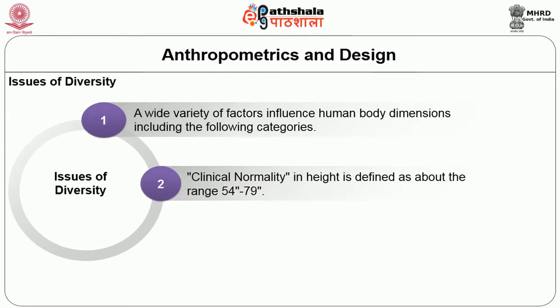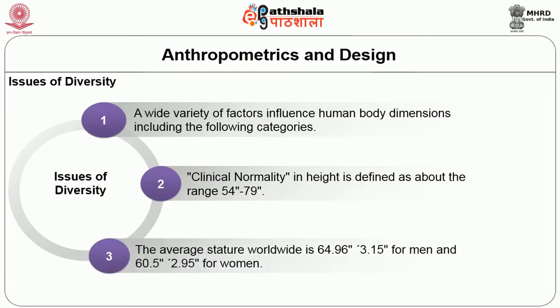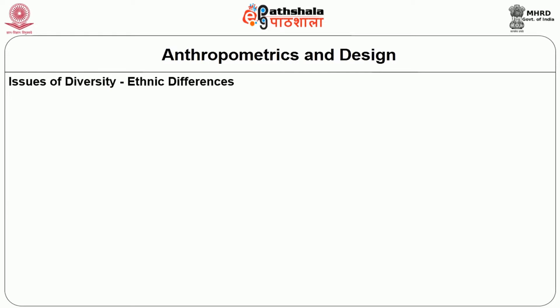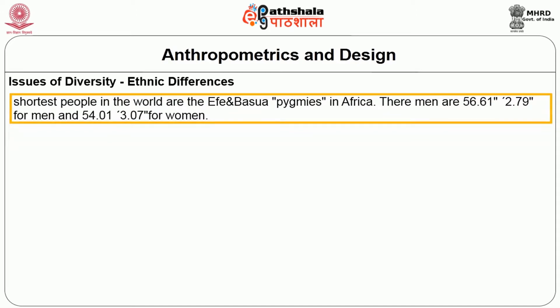Clinical normality in height is defined as approximately the range of 54 to 79 inches. The average worldwide stature for men is 64 to 96 inches, and for women it is approximately 60.5 inches. Regarding ethnic differences in design: the shortest people in the world are the African Pygmies, with men at the smallest sizes. The largest are in southern Sudan, where men are approximately 72 inches and women 66.4 inches.